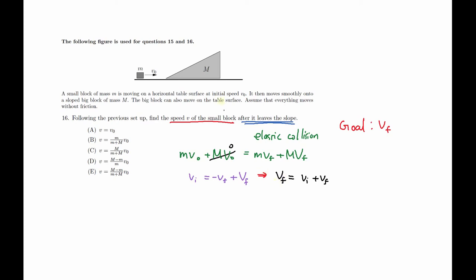By writing VF equals VI plus VF. So this small V is corresponding to our small block, the big V corresponds to our big block. And I'm going to substitute these two into our big VF. So what we get is MV0, MV0 plus, we don't need that because we don't have to add zero, equals M V final plus big M times VI plus VF.